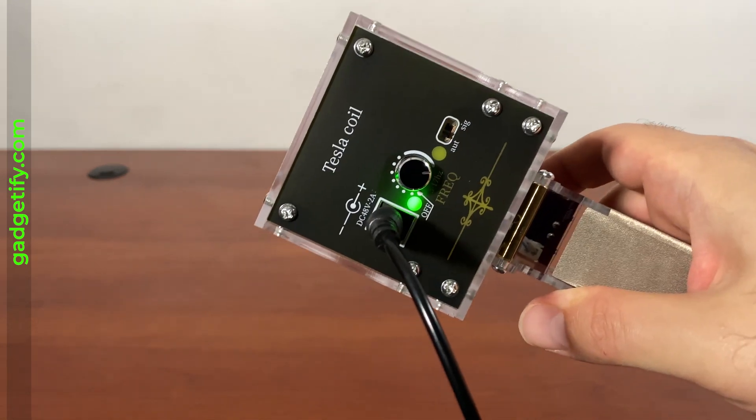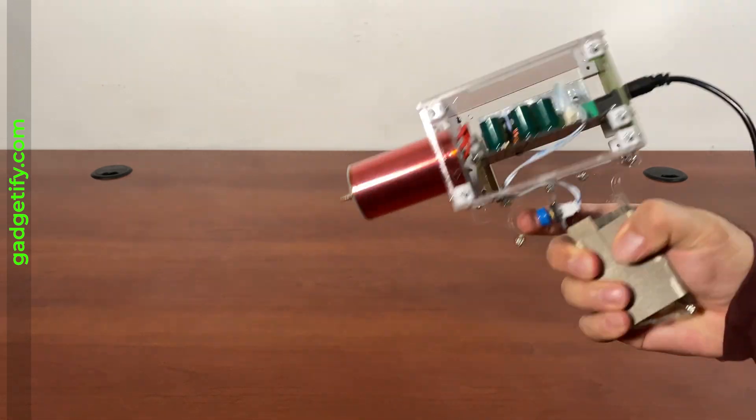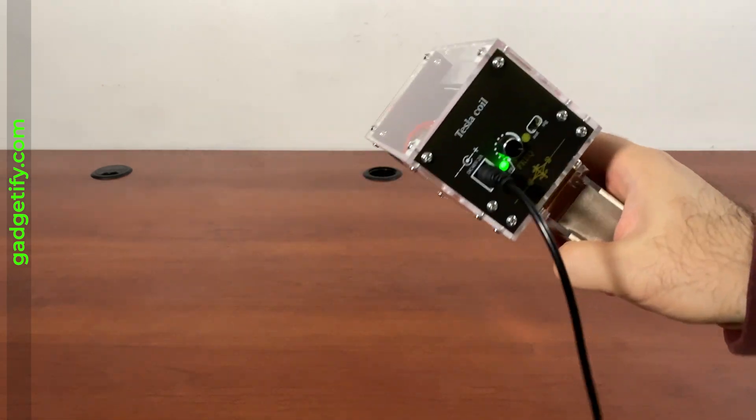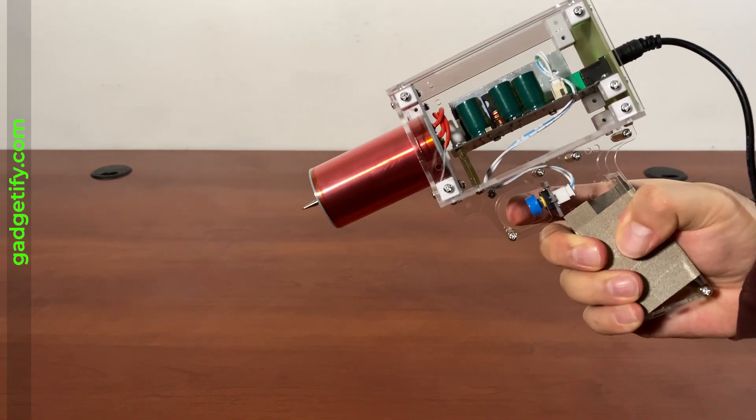So as you can see, it has two modes, a manual mode and automatic mode. The automatic mode is like this, and then the manual mode is just one when you pull the trigger.